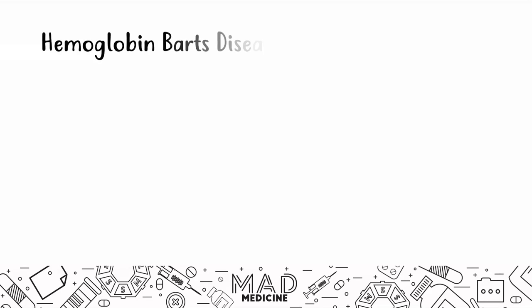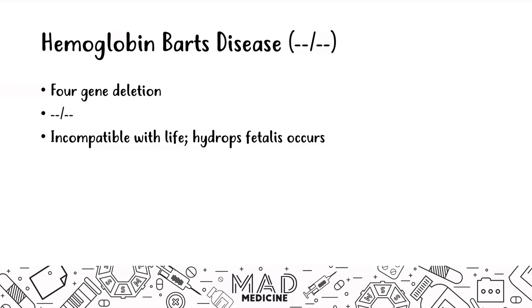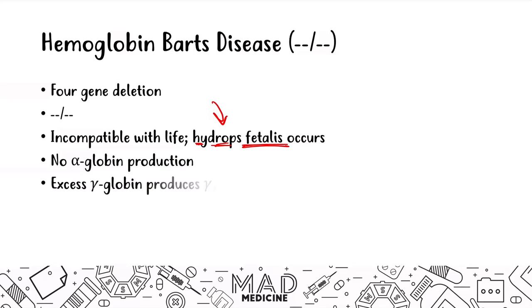Hemoglobin BARTs occurs with four gene deletions — all of your alpha chain genes are deleted — and this is incompatible with life. It causes hydrops fetalis to occur in the fetus; they are not able to develop properly and a natural abortion will occur. There is no alpha globin production, so you have excess gamma globin production, producing gamma four.